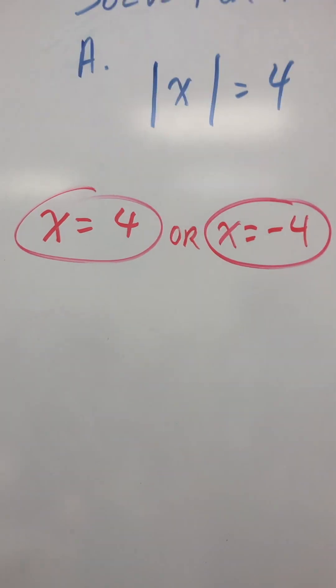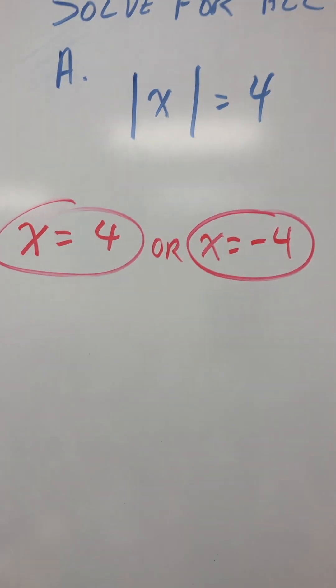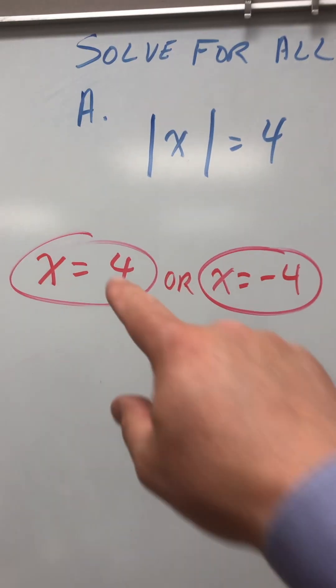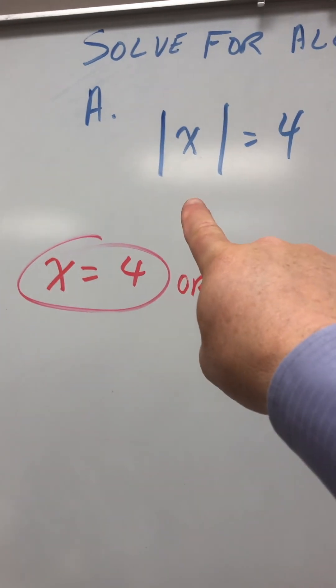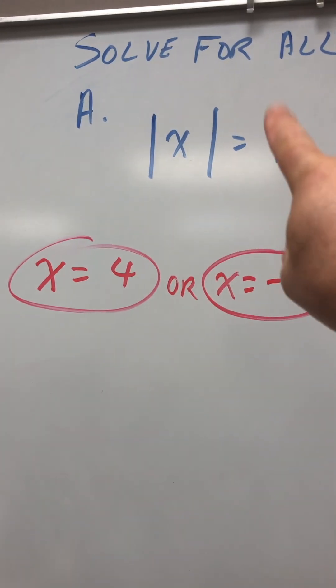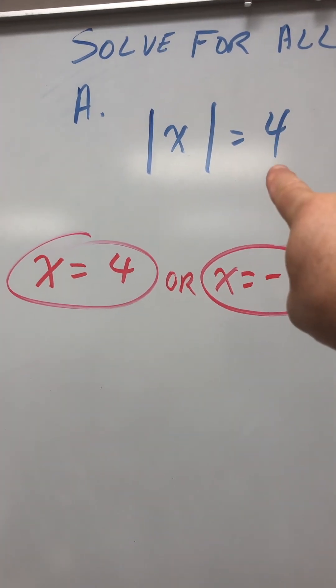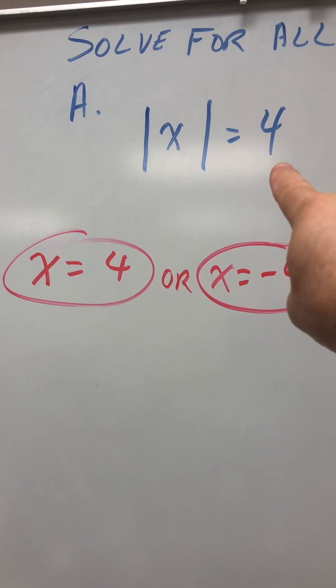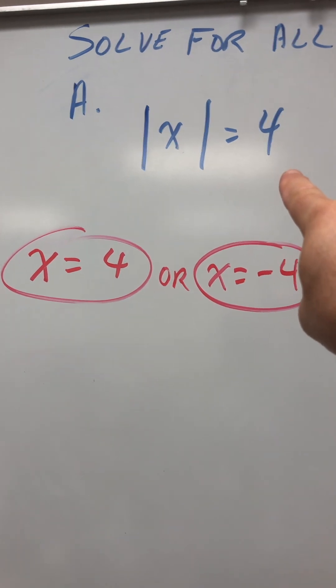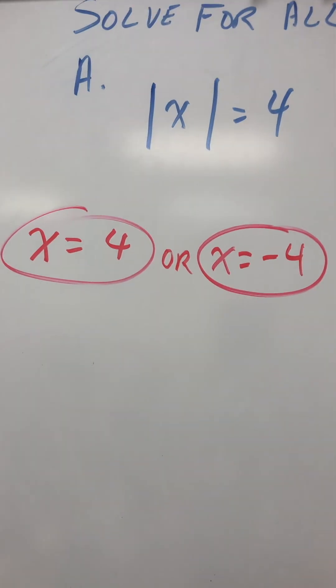So what's happening is whenever you have an absolute value, that means this number will be positive or negative in order to solve.